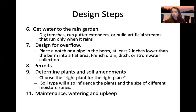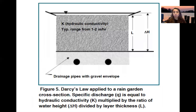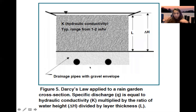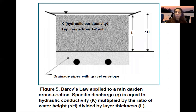You need to get permits and choose the right plants and soil amendments, and plan maintenance for drainage. Darcy's law applies to a rain garden cross section: specific discharge equals hydraulic conductivity multiplied by the ratio of water height divided by the layer thickness of the soil or substrate.